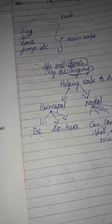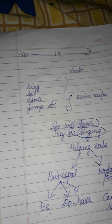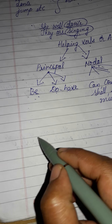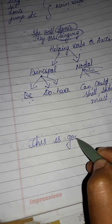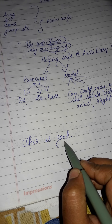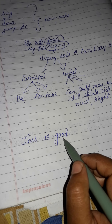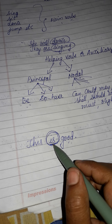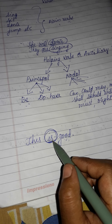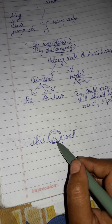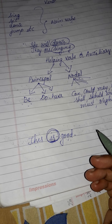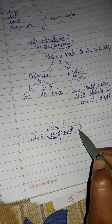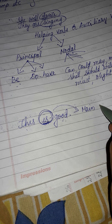Sometimes these helping verbs act as main verbs. For example, 'she will dance' — dance is the main verb. But sometimes the helping verb becomes the main verb. Consider 'This is good.' Good is an adjective here, not a verb. So 'is,' which is normally a helping verb, is here acting as the main verb — it is telling us about the mood, voice, and time.